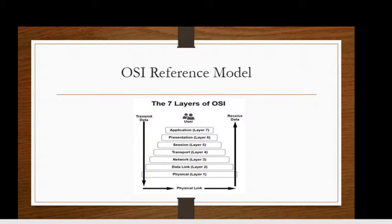The OSI Reference Model has seven layers. The first layer is physical layer. Second layer is data link. Third layer is network. Fourth layer is transport.